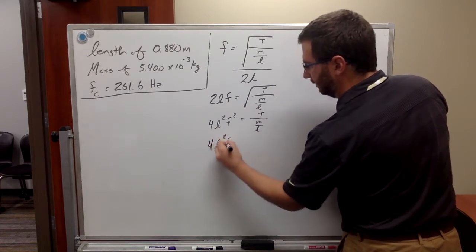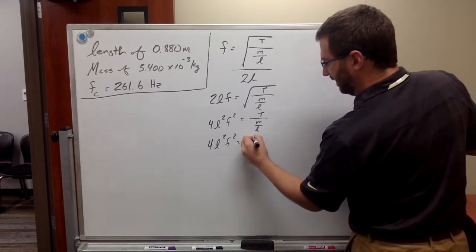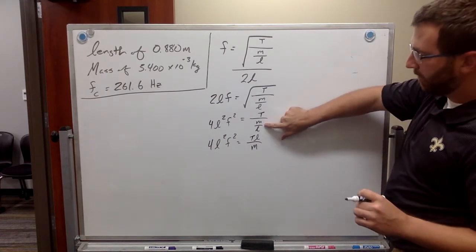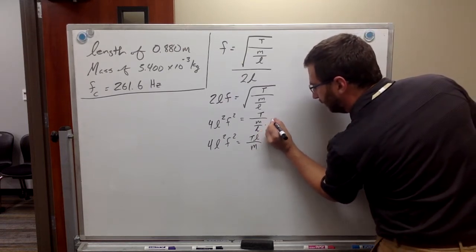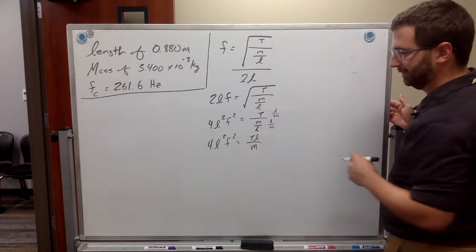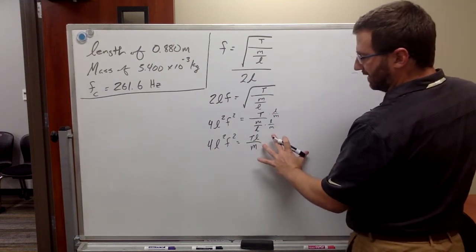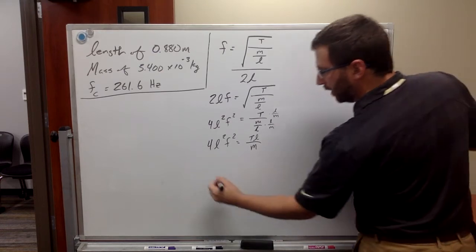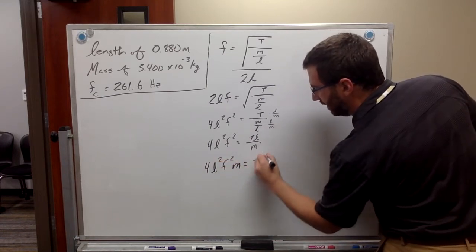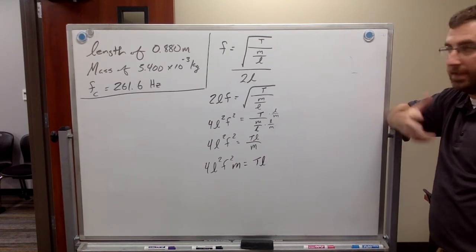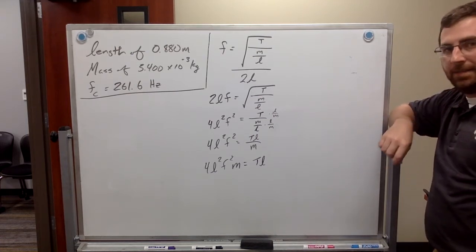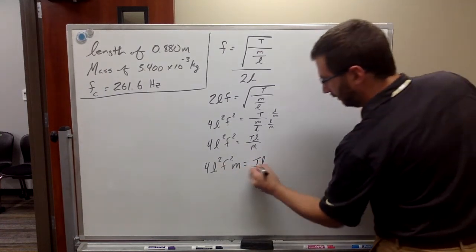So, the stuff on the left side stays the same. On the right side, this would be T L over M. Because, basically, what we did, we flipped M over L, and we multiplied it. So, we multiplied by L over M. Algebra stuff. All right, now, still got to get T by itself. So, if we multiply both sides by this M value right here, well, then we get 4L squared F squared M equals T times L.